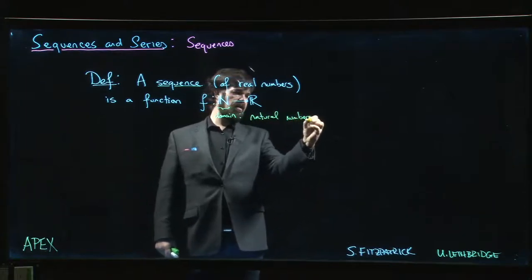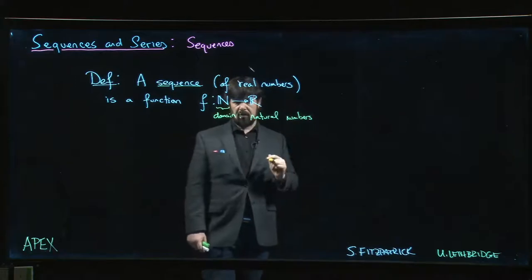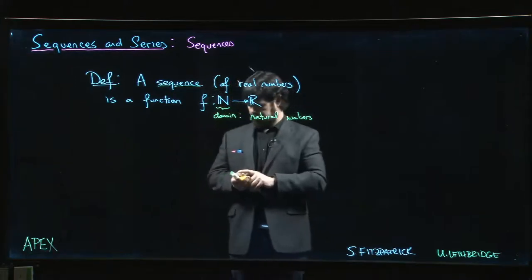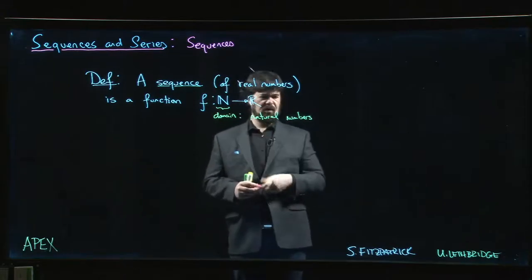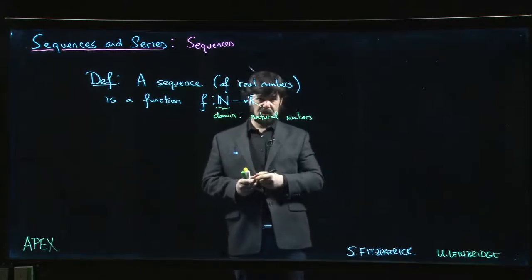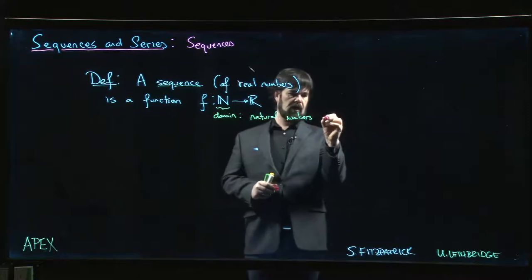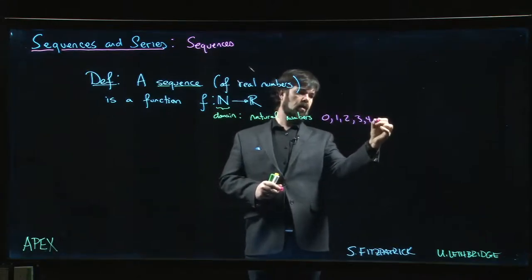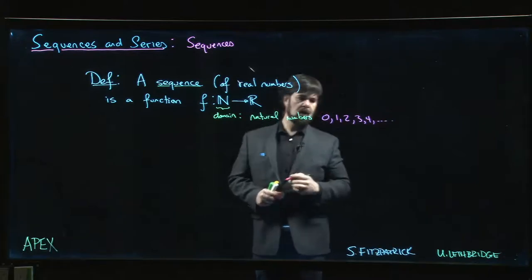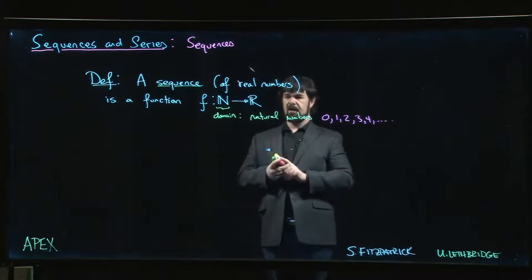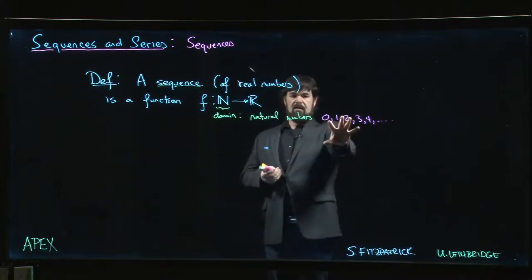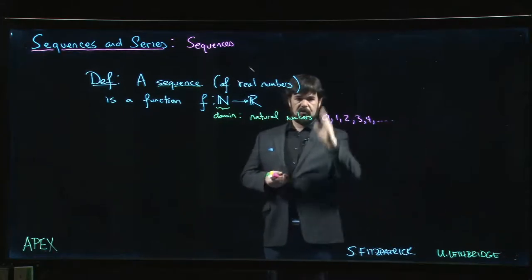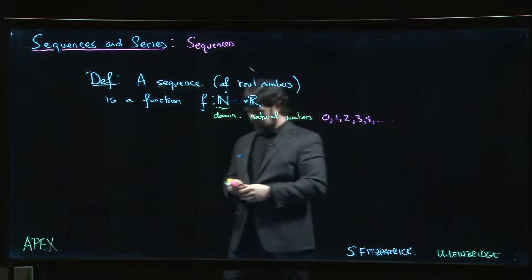Okay, so big N here stands for the natural numbers. And depending on who you ask, sometimes the natural numbers include zero, sometimes they don't. We'll allow zero because sometimes it's convenient to have a sequence start at zero. So we're looking at zero, one, two, three, four, and so on. And so the idea is basically, for every natural number, we can write those out in a list. And for every natural number on the list, we write down a corresponding real number.